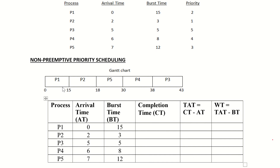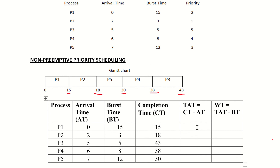For non-preemptive priority scheduling: the completion time of P1 is 15. Completion time of P2 is 18. Completion time of P3 is 43. Completion time of P4 is 38. Completion time of P5 is 30.